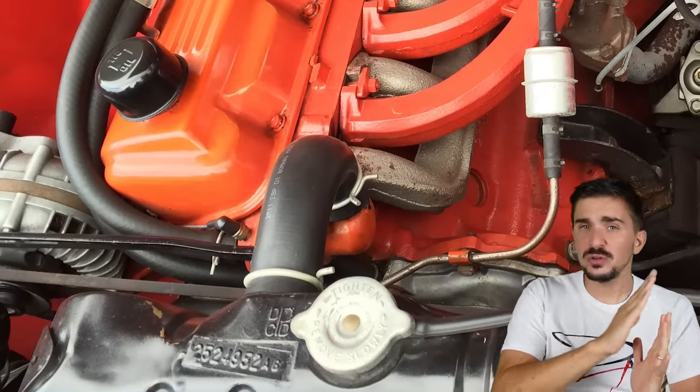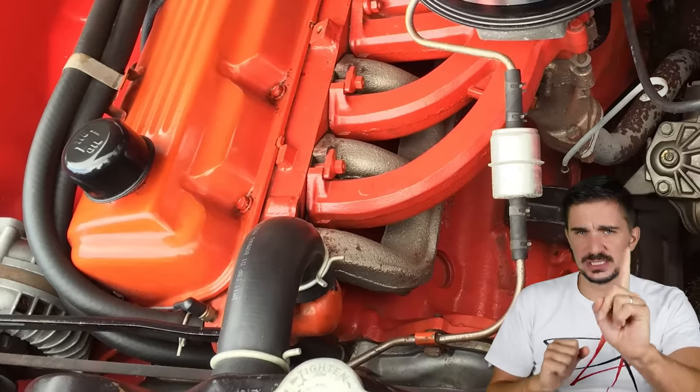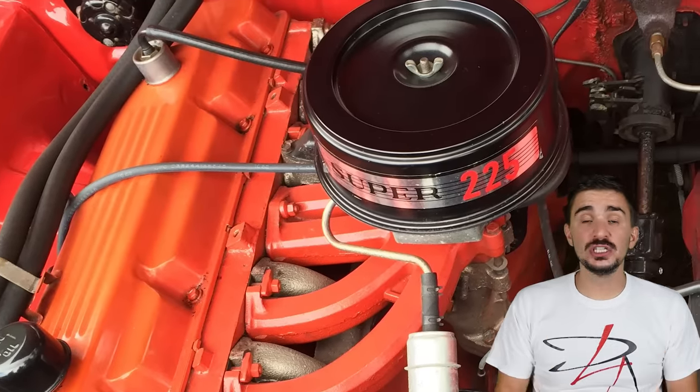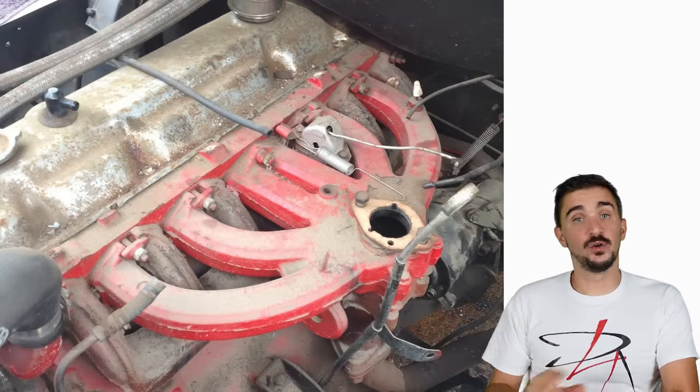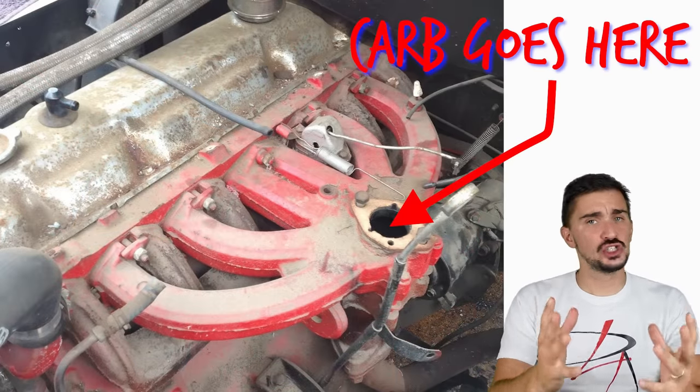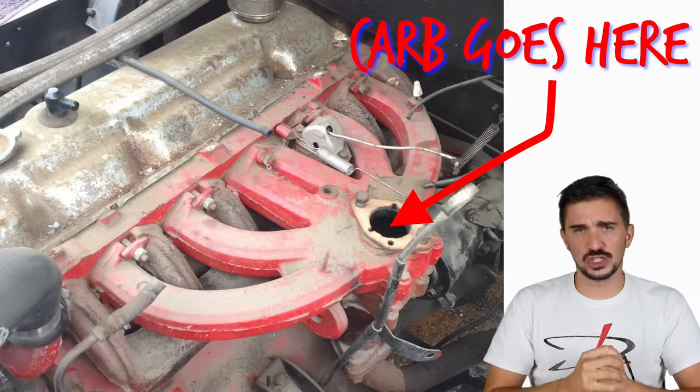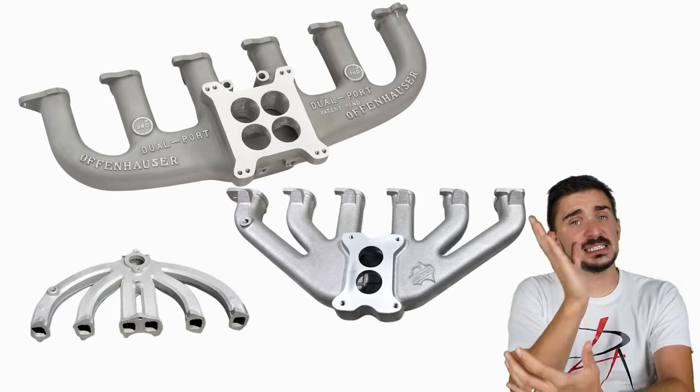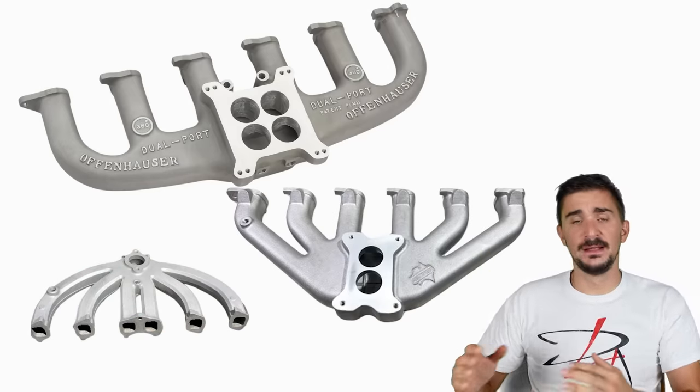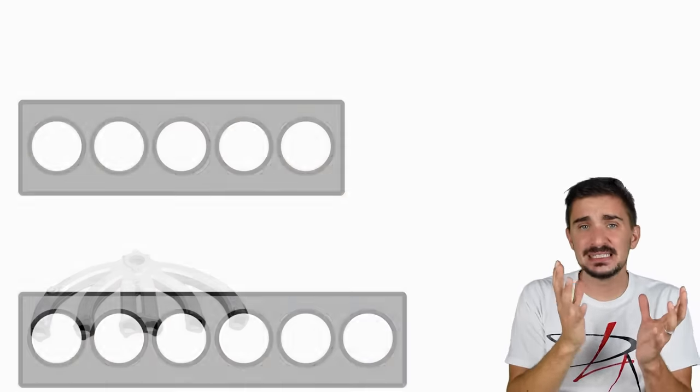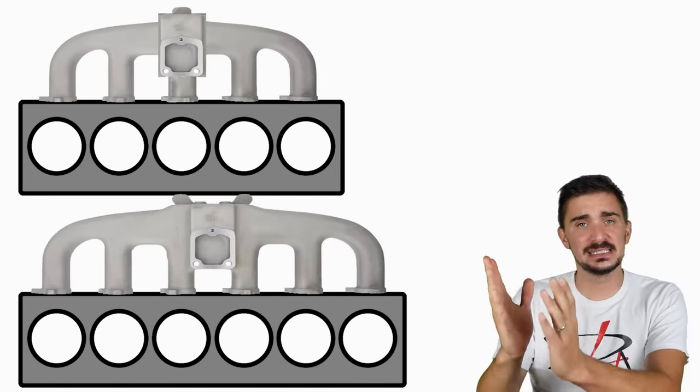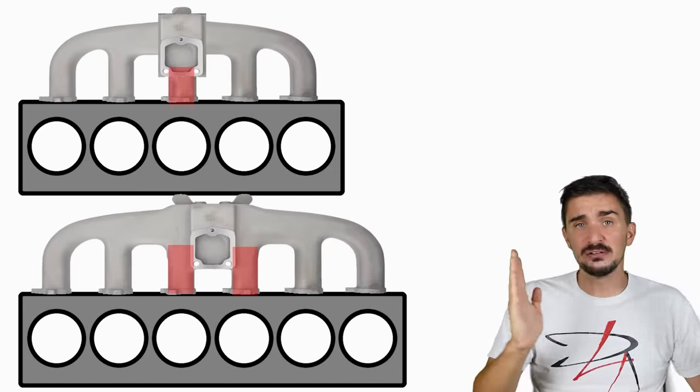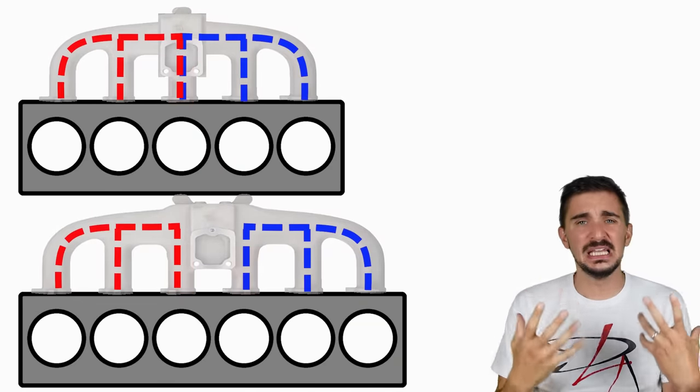However, there is a counter argument to everything I just said. Most importantly, the single carb, single intake manifold setup. And it's that over the years, we had many single carb, single intake manifold Inline 6 engines. Some had very successful, very long production runs. And if you take a look at their intake manifold, you can observe a massive difference in runner length. In fact, if you put them side by side, the only distinction is that in the Inline 6, we have two runners in the middle, but in the Inline 5, we have one.